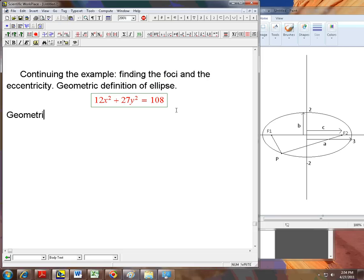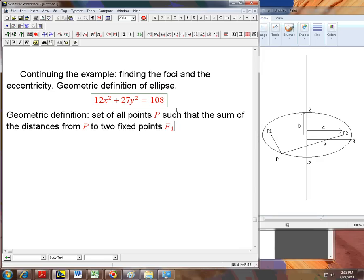So the geometric definition, I'll just say it briefly because I'll talk about it in class as well. It's the set of all points P such that the sum of the distances from P to two fixed points F1, F2, is a fixed constant. That's going to be abbreviated as d(P, F1) plus the distance from P to F2 equals a constant.